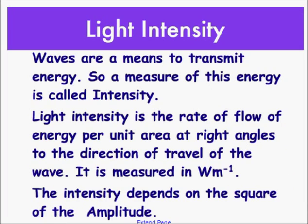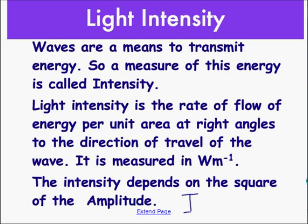Light intensity is essentially how bright things are, and that relates to power. Waves are a means to transmit energy. A measure of this energy is called intensity. Light intensity is the rate of flow of energy per unit area at right angles of direction of travel of the wave. It is measured in watts per meter squared. The intensity depends on the square of the amplitude, so there's a relationship between intensity I and amplitude. It's a proportional relationship, so if I double the amplitude I should have 4 times intensity.